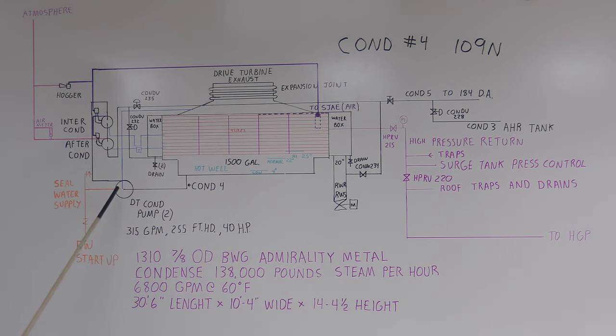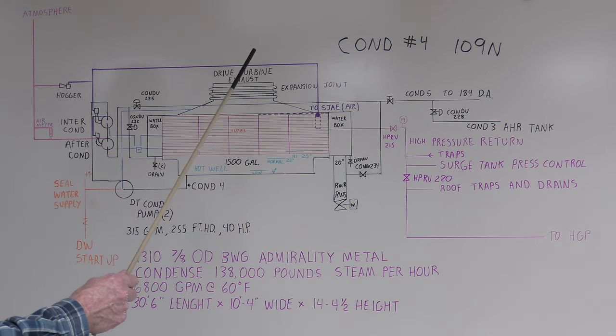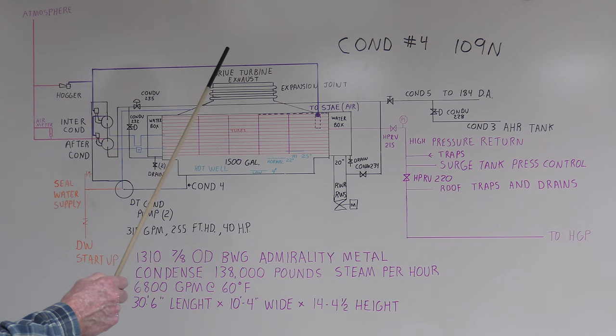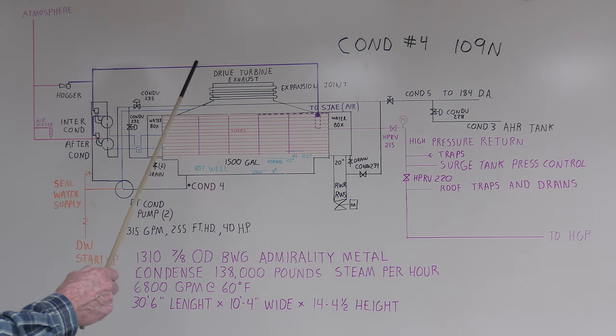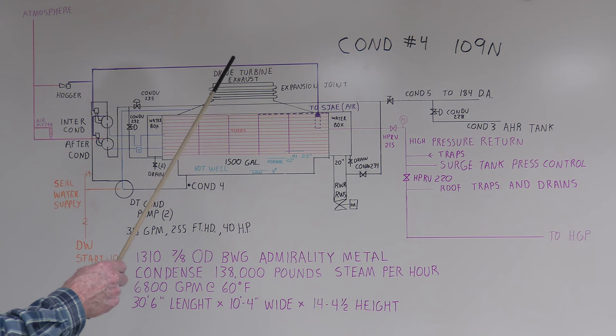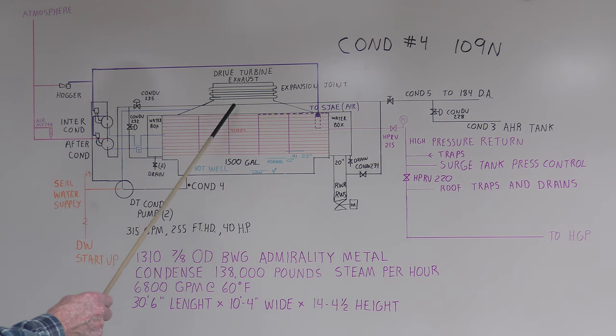We added a few more things on this. Basically, this system had your drive turbines on 109 building set up on the main floor, and down at minus 16 you had the surface condensers. The exhaust out of the drive turbines came down through an expansion joint to the top of the surface condenser.